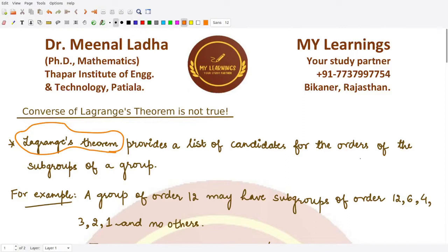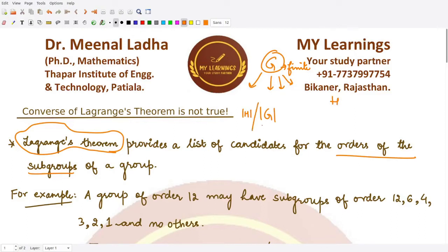Suppose you have G as some finite group. For this finite group we may have different subgroups. We already know the order of the group G, so we would say if H is some subgroup then this subgroup H would surely divide the order of the group G. For example, if we have a group G having order 12, then we know the divisors of 12: they are 12, 6, 4, 3, 2, and 1. Therefore this group G would have a subgroup H such that the order of H could be 12, 6, 4, 3, 2, or 1.